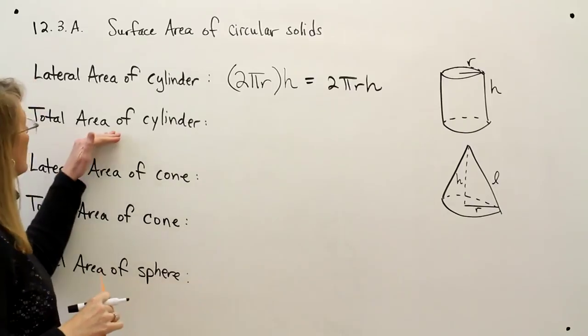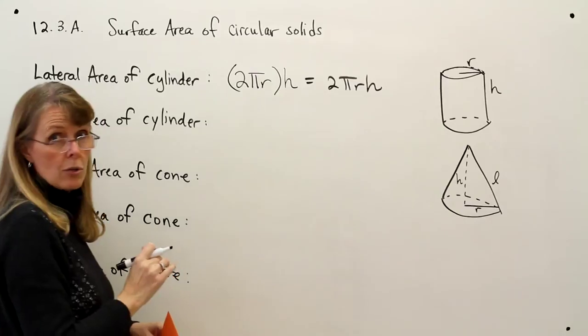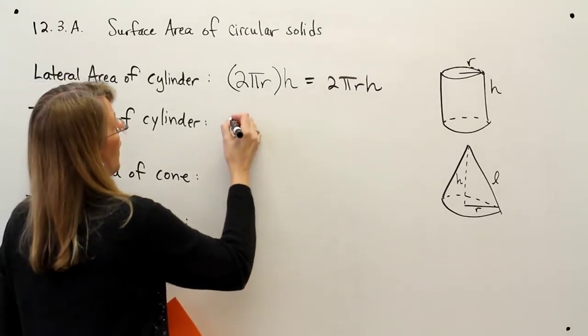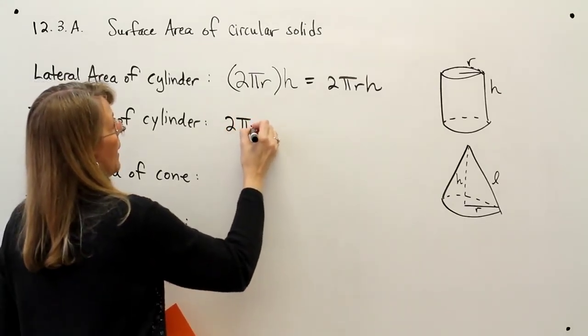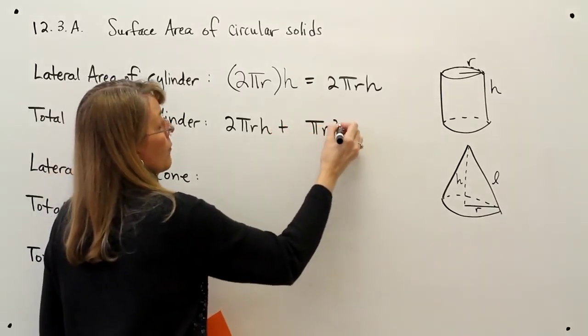To get the total area of a cylinder, we just need to add in the bottom and the top. Those are circles. So we know I would take the 2πrh, and then I would add on a πr² for the bottom.